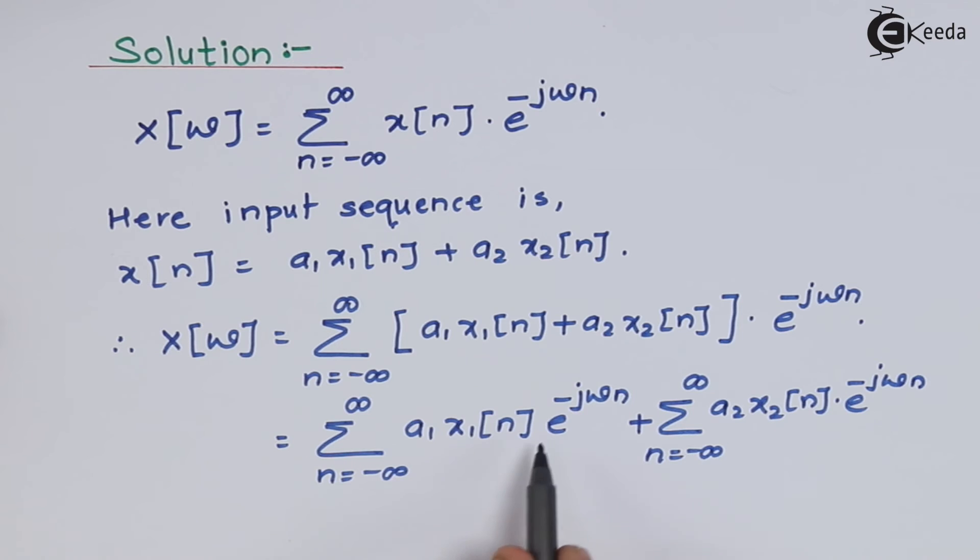So we can directly say that this is nothing but the definition of discrete time Fourier transform, but first of all we have to take a1 and a2 outside.